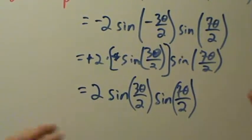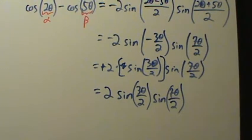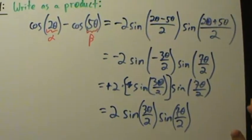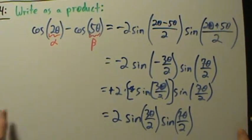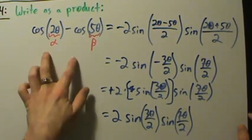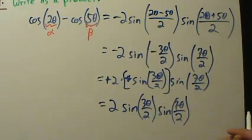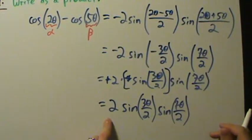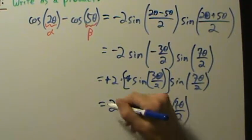And that's our final answer. Cosine of two theta minus cosine of five theta, rewritten as a product using the fourth sum to product formula, equals two times the sine of three theta over two times the sine of seven theta over two.